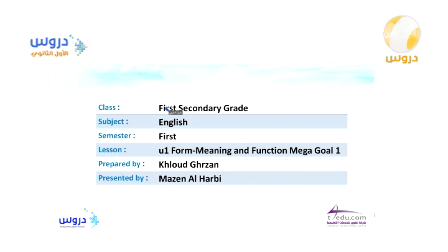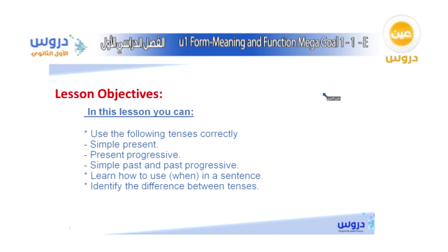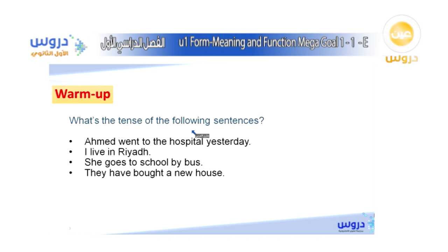Welcome everyone into today's lesson. This is the lesson for first secondary grade English subject for the first semester. It is Unit 1, Form, Meaning and Function, Make a Goal 1. It is prepared by Hulus Farazan and presented by Madhina Hadbir. Our lesson objectives are: number one, use the following sentences correctly — simple present, present progressive, simple past, and past progressive — and then learn how to use 'when' in a sentence and identify the difference between sentences.